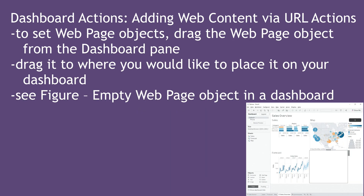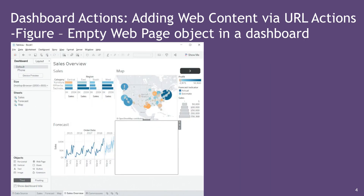To set web page objects, drag the web page object from the dashboard pane and drag it to where you would like to place it on your dashboard. You can see in the figure here there's an empty web page object in a dashboard — more clearly visible on the bottom right as a big empty square.